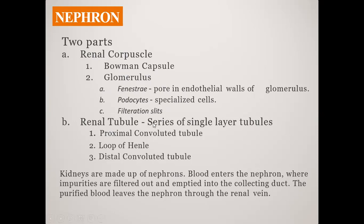The renal tubule is a single-layered series consisting of the Proximal Convoluted Tubule, Loop of Henle, and Distal Convoluted Tubule — these are three parts. The Proximal Convoluted Tubule forms from Bowman's capsule, the Loop of Henle is U-shaped, and the Distal Convoluted Tubule leads to the collecting duct, which empties into the renal pelvis.